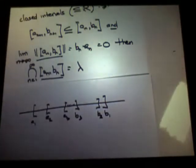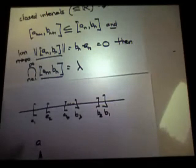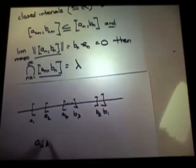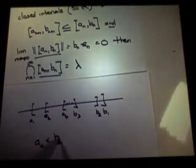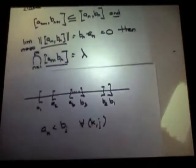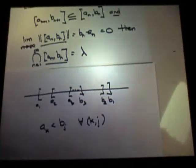First observation. AK is less than BJ for all pairs K, J. So, what's this saying in words? No left endpoint is ever greater than or equal to any right endpoint. Well, why would that be true? Well, if it weren't true, what would be happening?